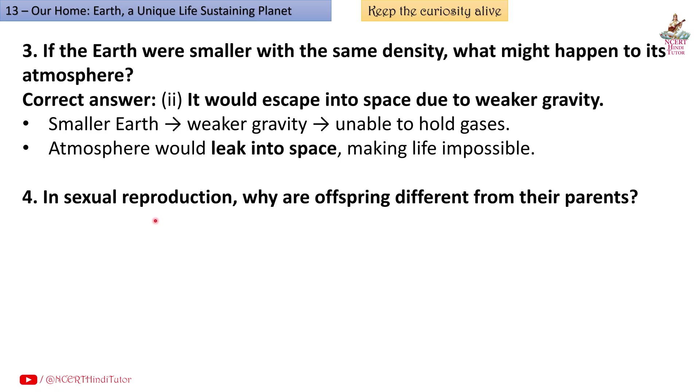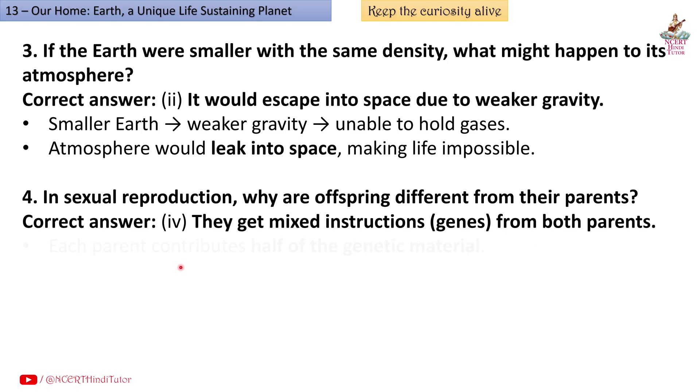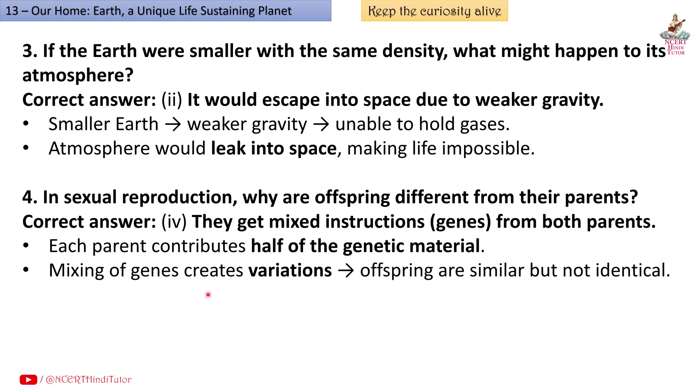Question 4: In sexual reproduction, why are offspring different from their parents? Correct answer: Fourth, they get mixed instructions - genes - from both parents. Each parent contributes half of the genetic material. Mixing of genes creates variations. Offspring are similar but not identical.